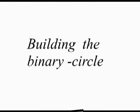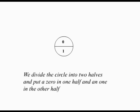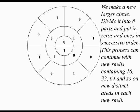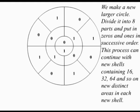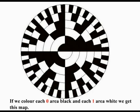Now let us study the structure of the insulators — building the binary circle. We start with a simple circle. We divide the circle into two halves, and put a 0 in one half and a 1 in the other half. We make a new larger circle, divide it into four parts, and put 0s and 1s in successive order. We make a new larger circle, divide it into eight parts, and put 0s and 1s in successive order. This process can continue with new shells containing 16, 32, 64, and so on, new distinct areas. By combining the 0s and 1s so that a line passes through the center of the last shell, we get the radial combination. Radial combination: 0, 1, 1. If we color each 0 area black and each 1 area white, we get the following map.